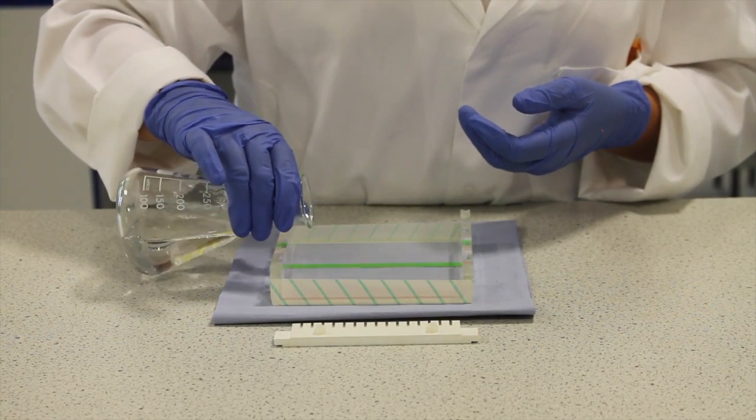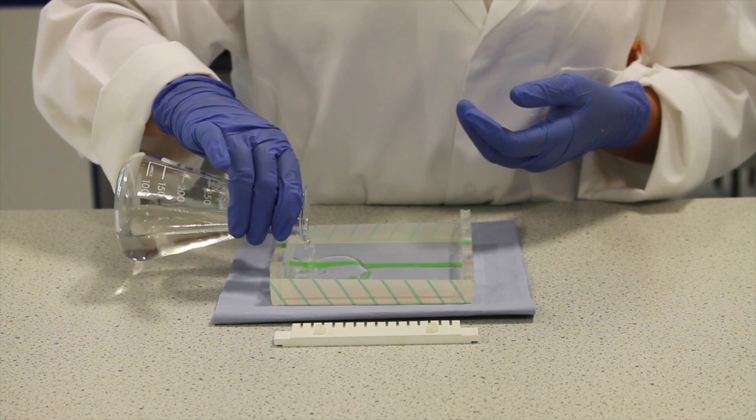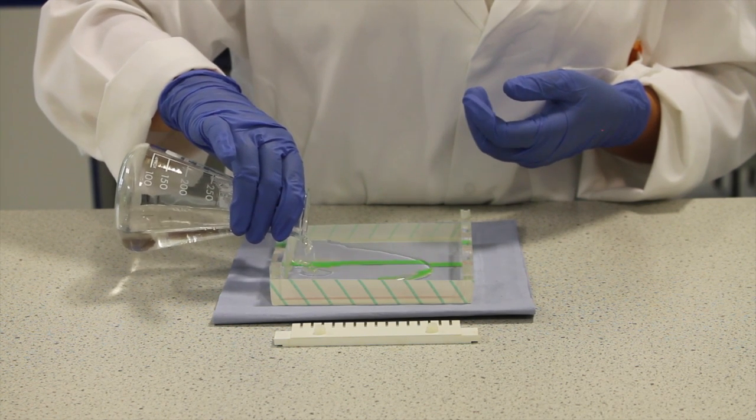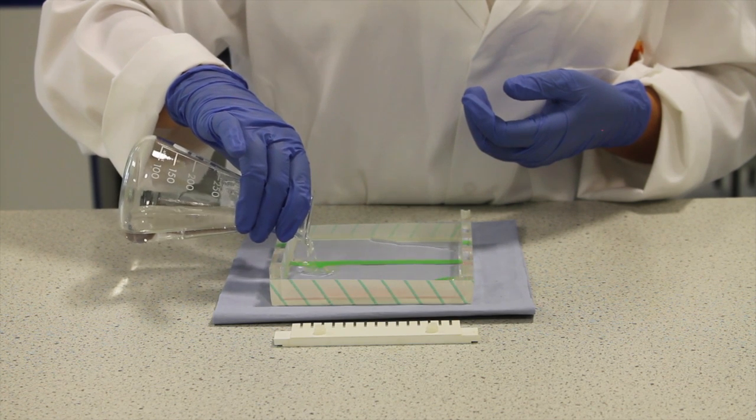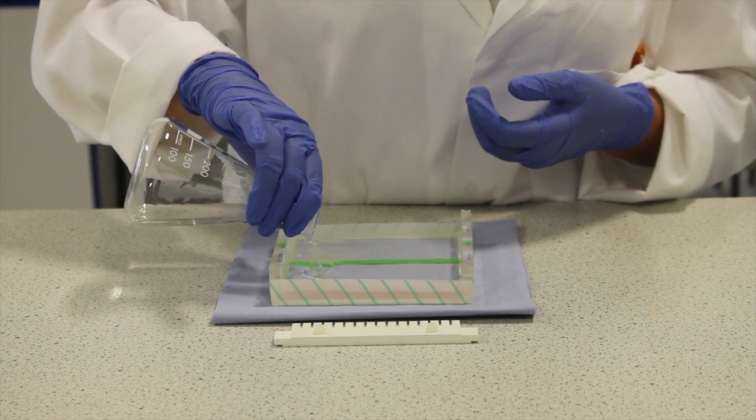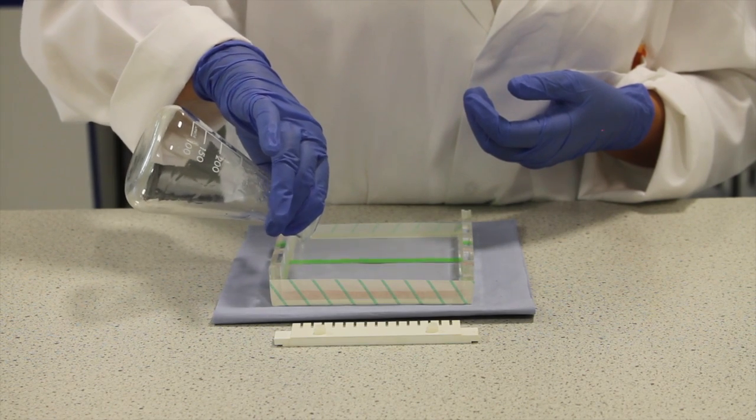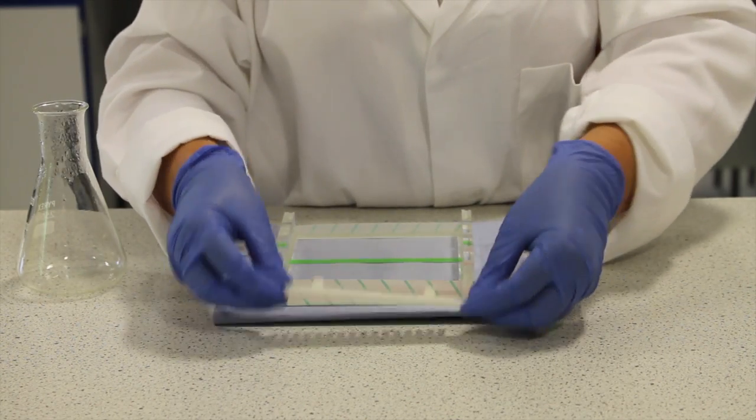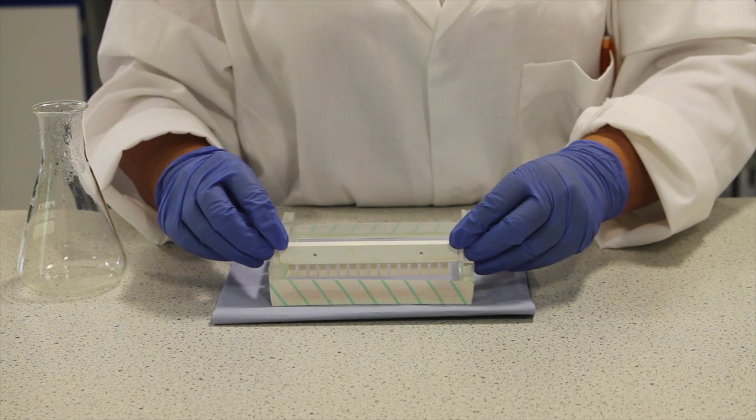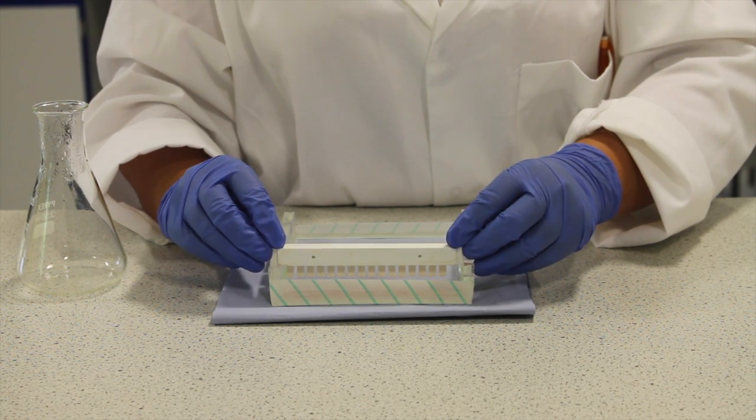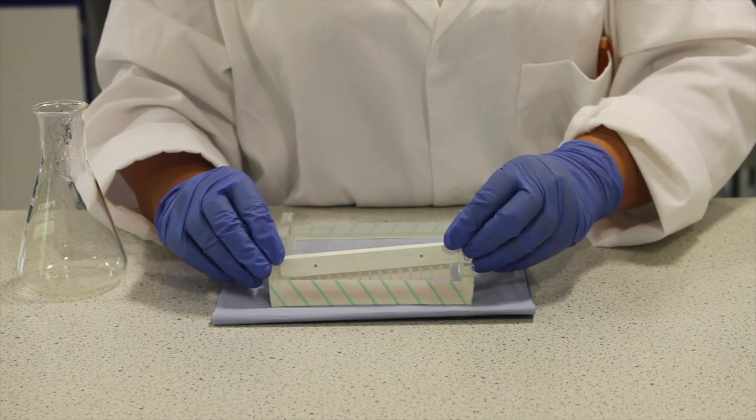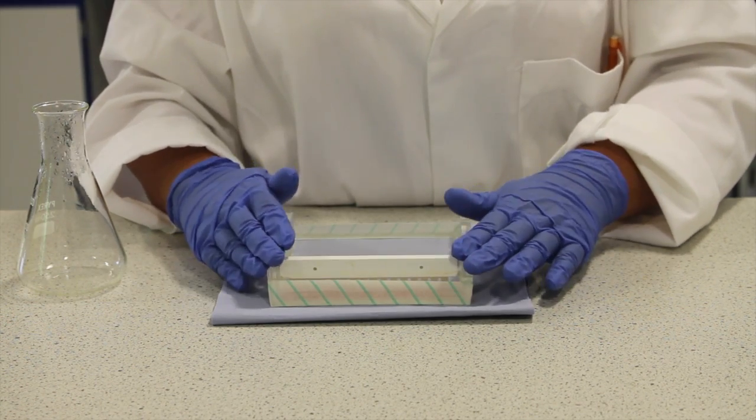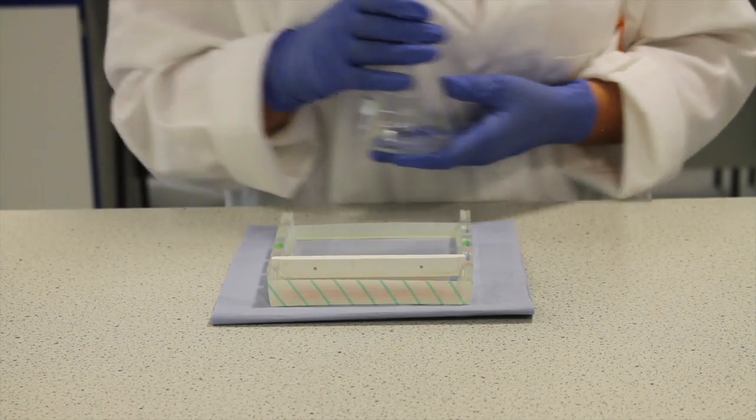When the gel is cool enough, carefully pour the solution into the casting stand. Do this slowly to avoid forming bubbles in the gel and also so that you can stop if the gel appears to be leaking from the stand. Once the gel is poured, a plastic comb is inserted into the gel. This comb will form wells into which the DNA can be loaded once the gel has hardened.